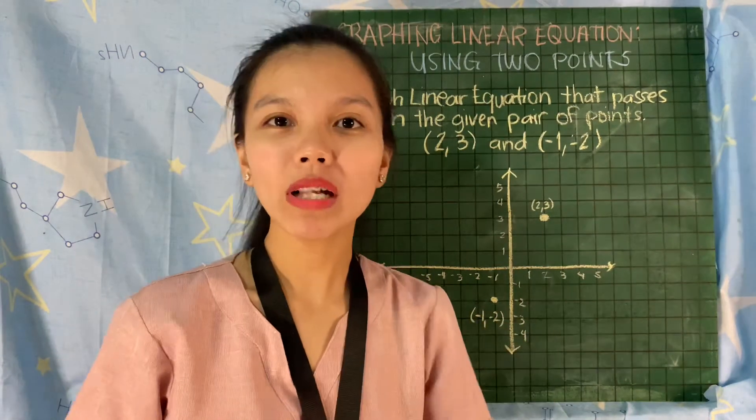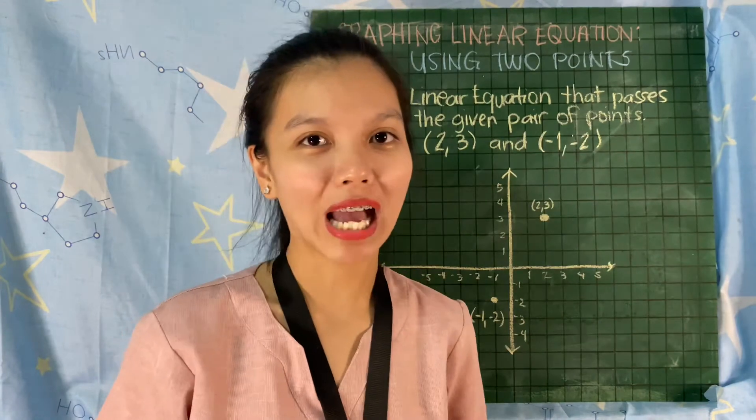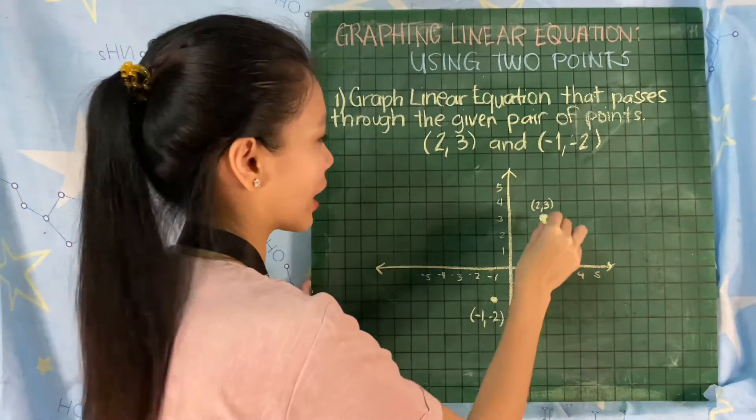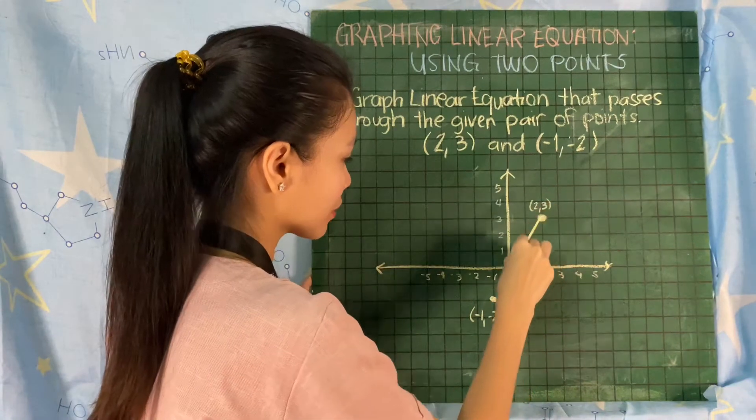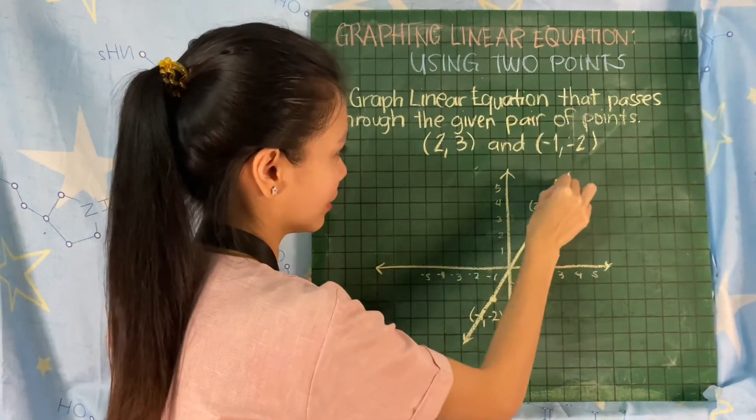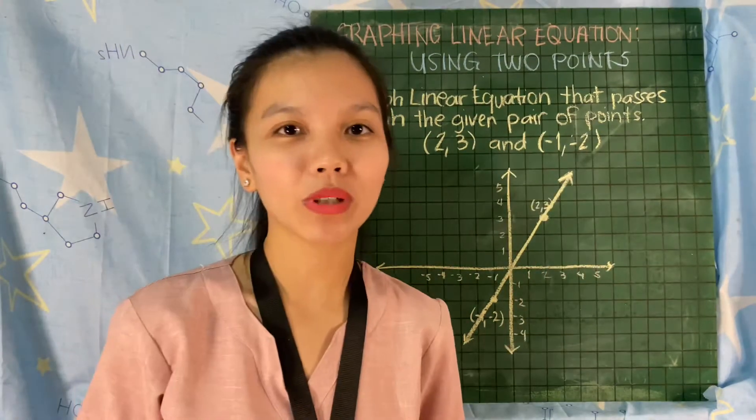Then you will just connect it. Once we connect them, that will be the graph of our linear equation. You can use a ruler to make the line straight. That's how the graph will look.